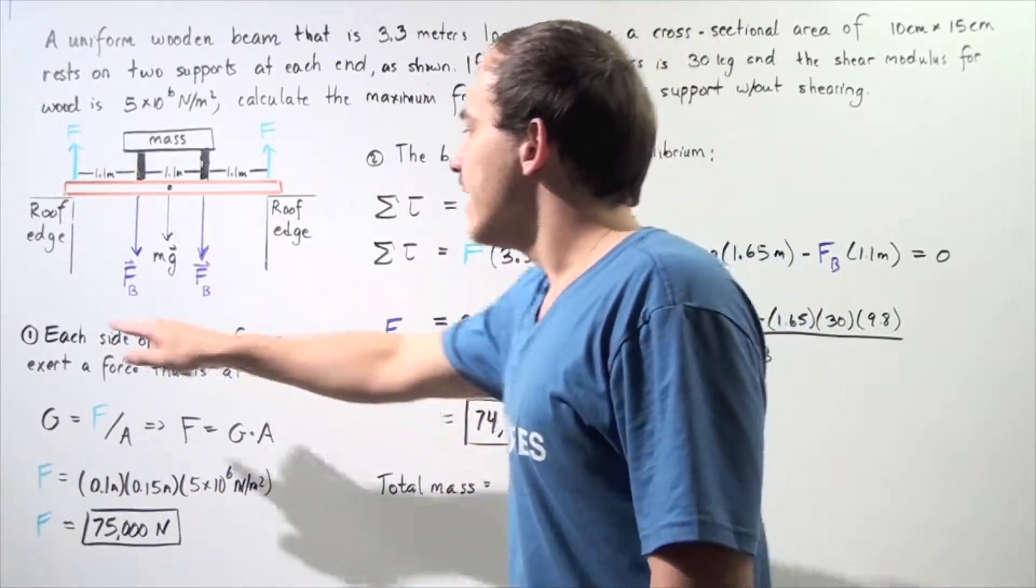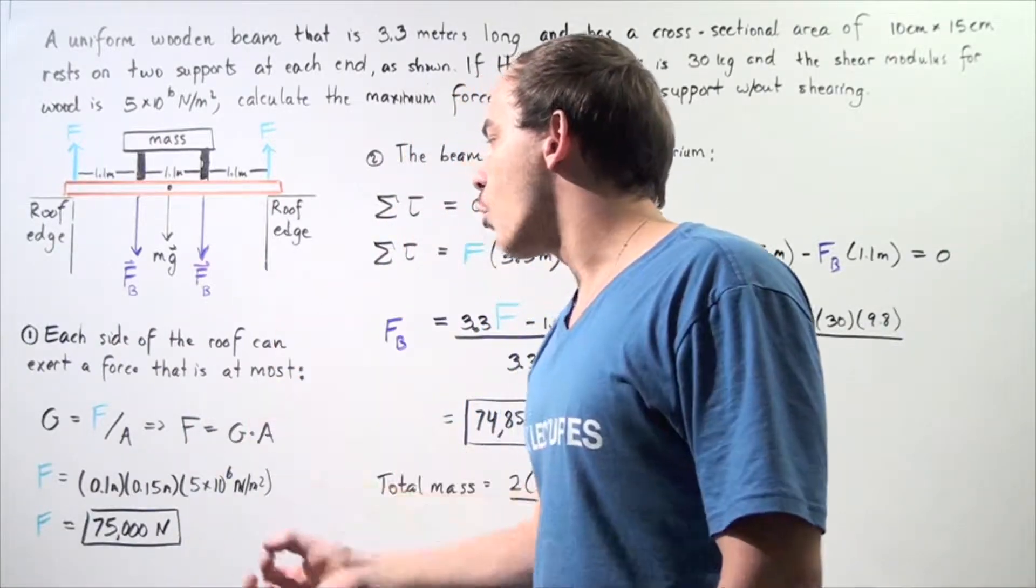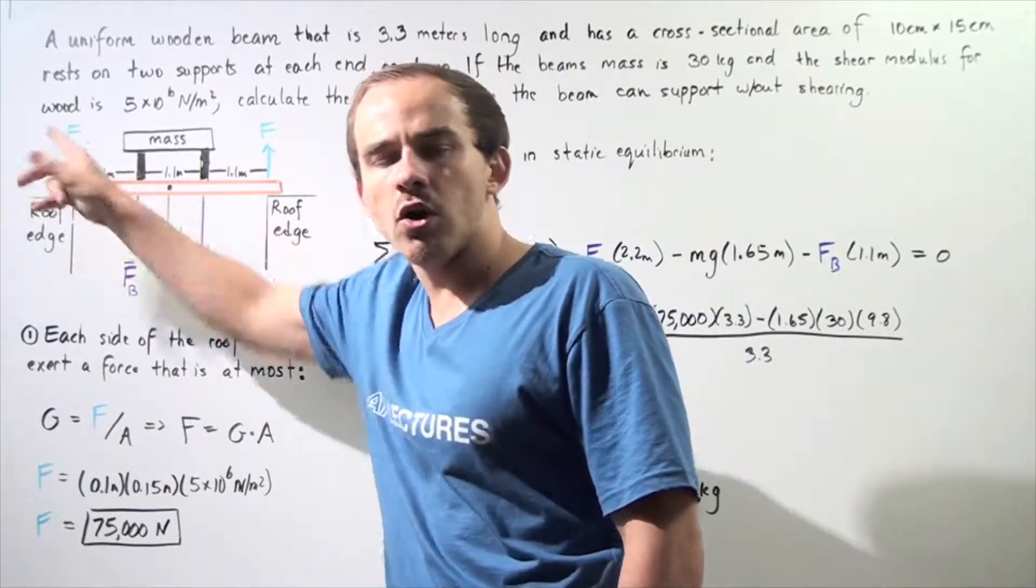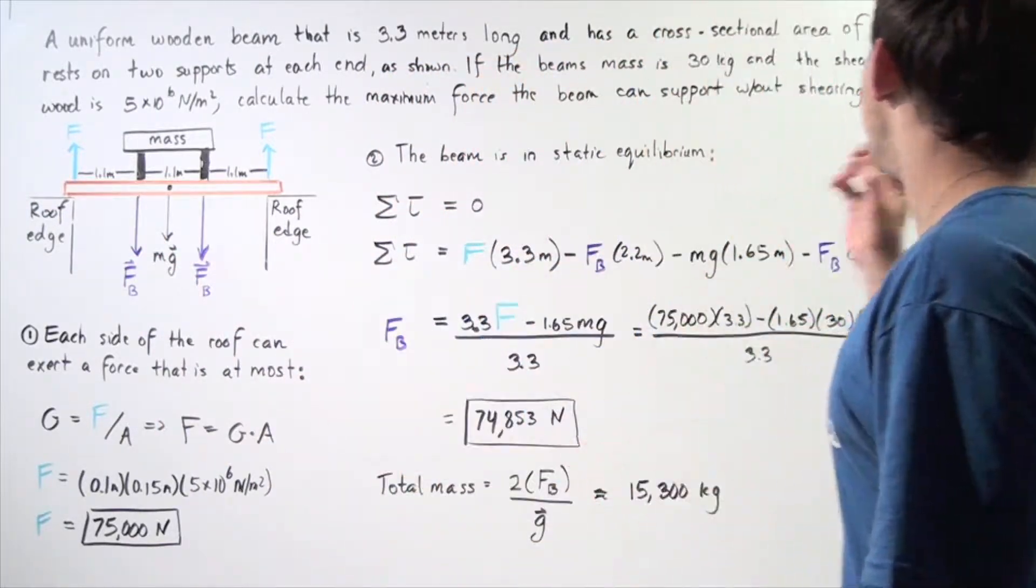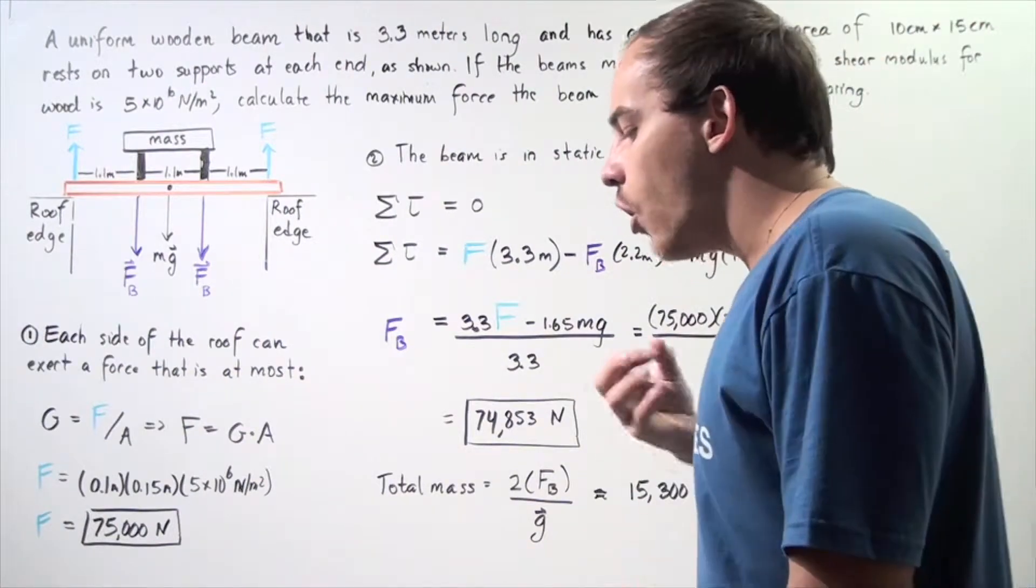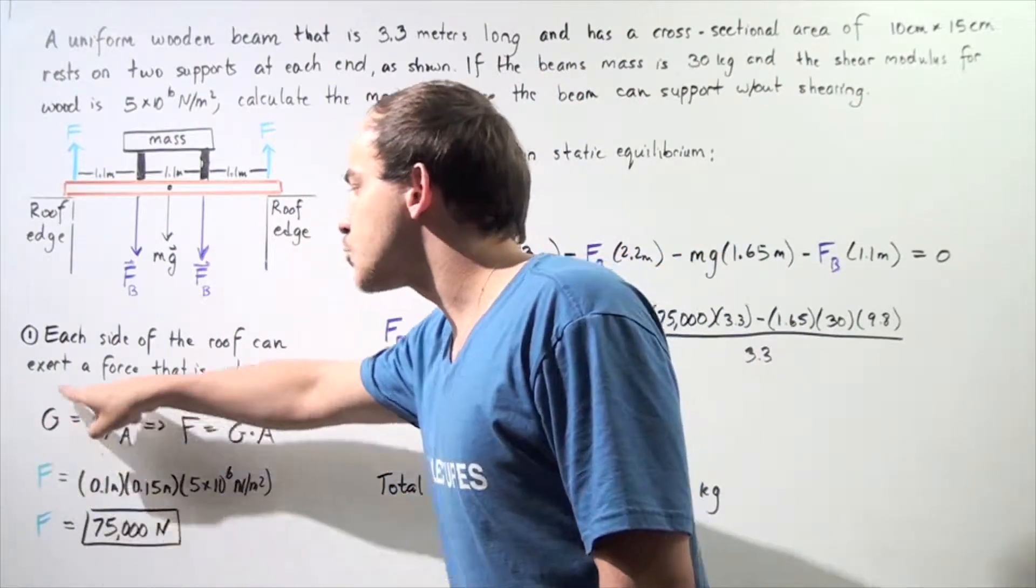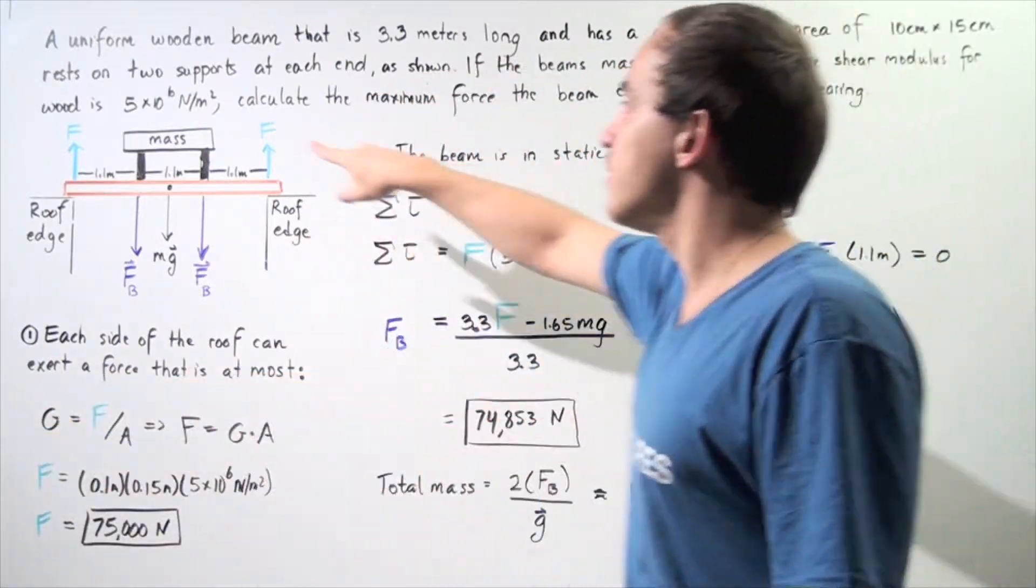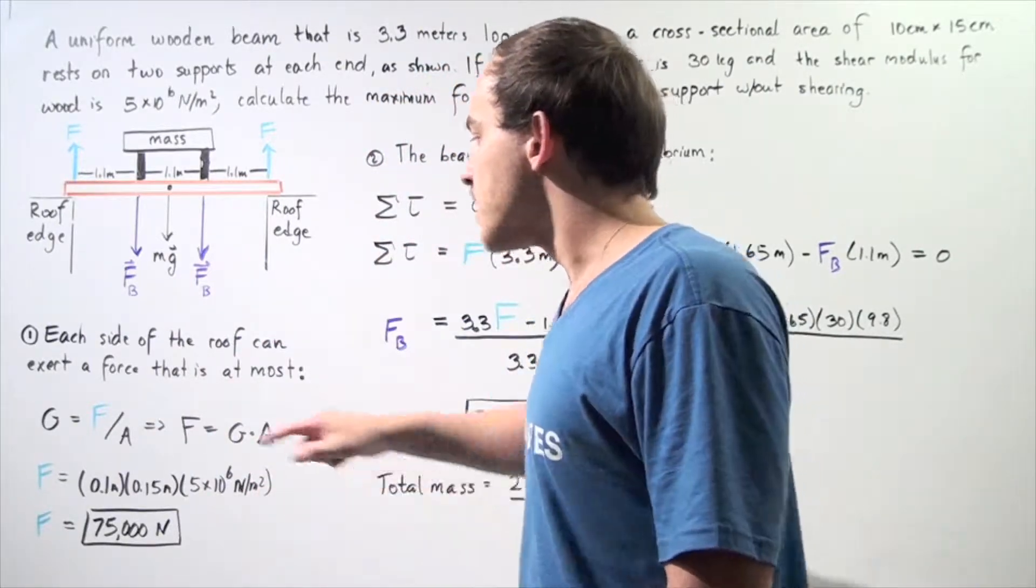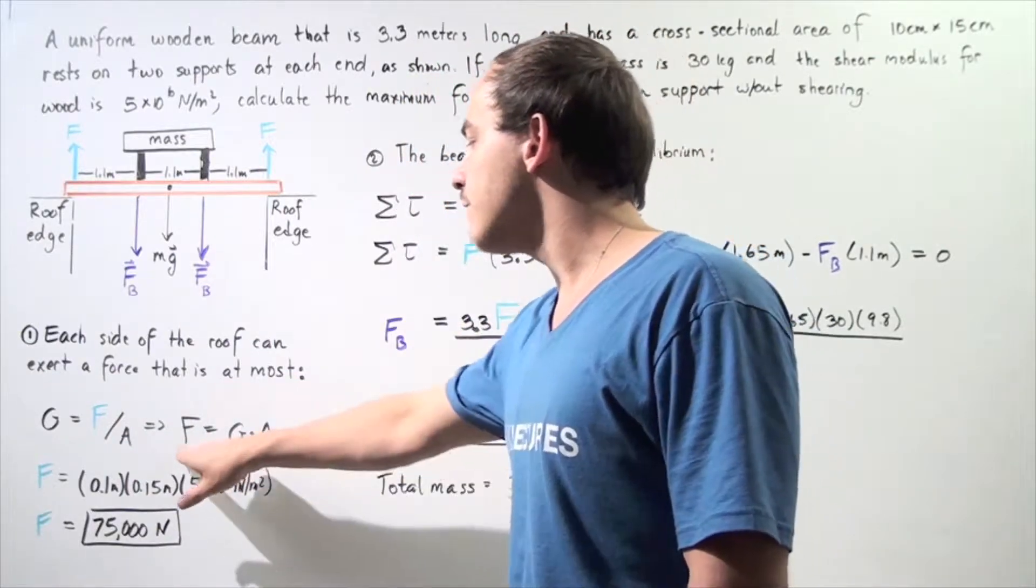So, let's go to step one. Each side of the roof can exert a force that is at most - well, to find this force, we have to use the shear modulus. The shear modulus tells us what the ultimate strength of our object is, of the beam. So, the ultimate strength of the object given by this quantity is equal to force divided by area. So, we know what g is, and we know what area is, so we can solve for the force.